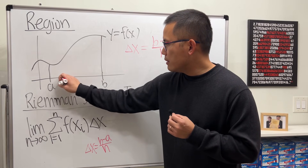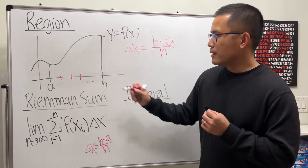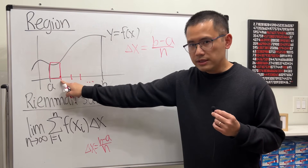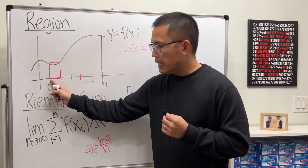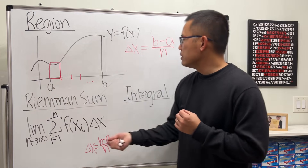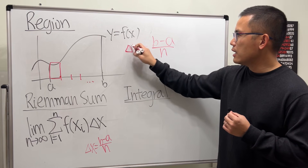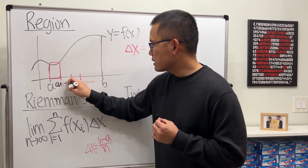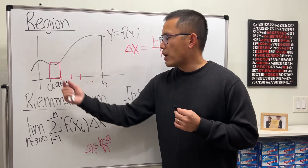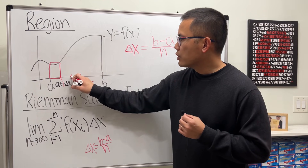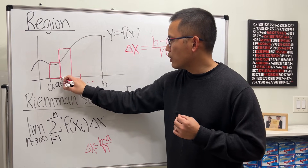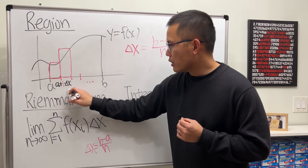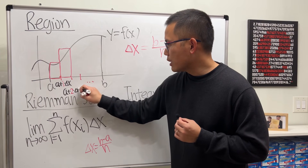Suppose we cut this into n pieces — I'll draw three of them. For the first x-value, go up and draw a rectangle. We started at a, so we add one delta x: that's a plus 1 times delta x. For the next x-value, go up, hit the curve, and draw a rectangle. We started at a and added delta x twice, so it's a plus 2 times delta x.